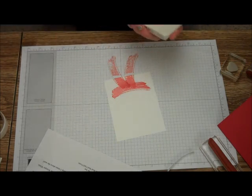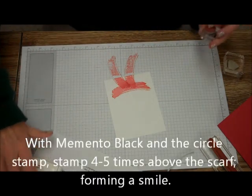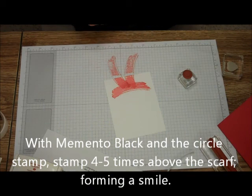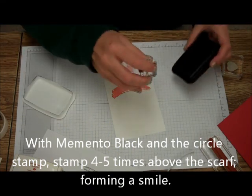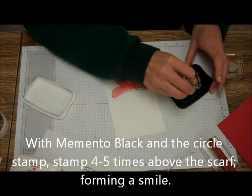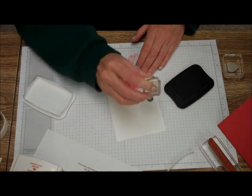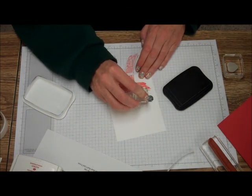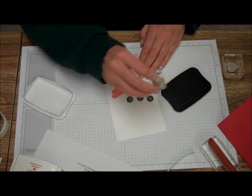And then we're going to take our circle and our black, and we're just going to put four or five little charcoal circles for the mouth.